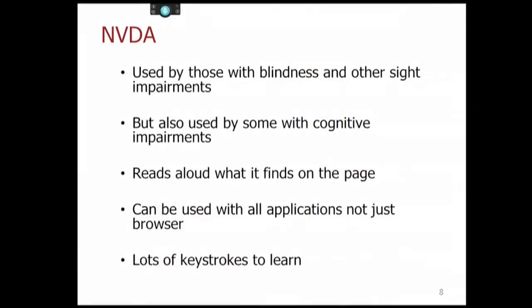NVDA is an open-source screen reader. It's free to download, and it's used primarily by people with blindness and other sight issues, but also sometimes by people with cognitive impairments and people with dyslexia. It reads out what it finds on the page — basically working off whatever is in the DOM when your website arrives in or has been manipulated in a browser. Like Dragon, it's used to interact with everything, not just browsing the web. It's very keystroke-based software with lots of keystrokes to learn.